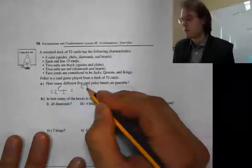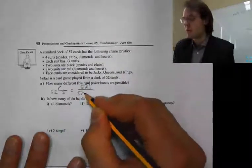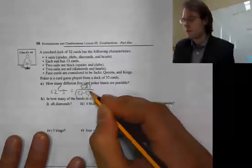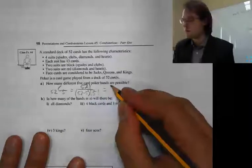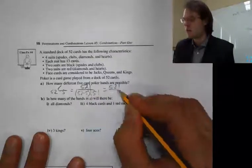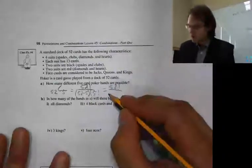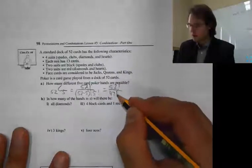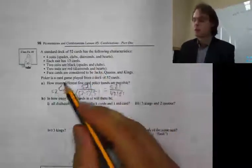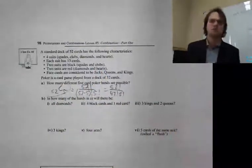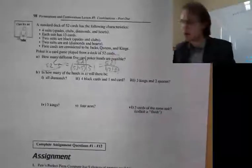You can plug that into your calculator, or go the long way: 52 factorial over 52 minus 5 factorial multiplied by 5 factorial — which is 52 factorial over 47 factorial times 5 factorial. I'd suggest using the calculator; it's a lot faster, but you need to know these are equivalent.